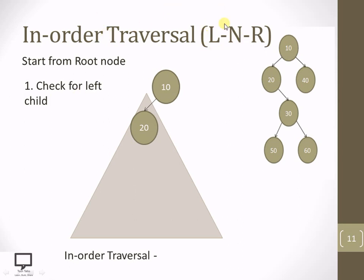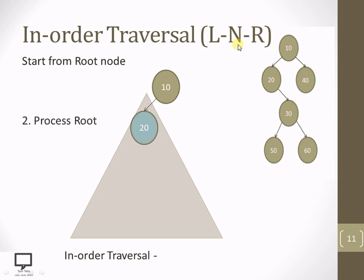Because now as this is the root node, again for a root node we need to start with left, then root, then right. So let's check for this node whether the left child is present. Here you can see that 20 is not having any left child. So what we need to do? We have done with the left for this current root. Let's process the root node. Processing means I am displaying it as the in-order traversal.